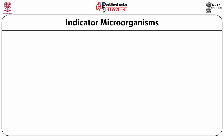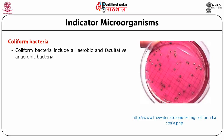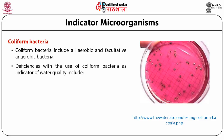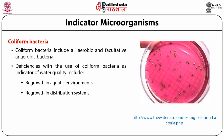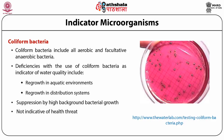The number one indicator microorganism is the well-known coliform bacteria. Coliform bacteria include all aerobic, facultative, and anaerobic bacteria. The deficiencies with the use of coliform bacteria as an indicator of water quality include regrowth in aquatic environments and regrowth in distribution systems, suppression by high background bacterial growth, and that it is not indicative of health risk with no relationship to enteric protozoa and viral concentration.